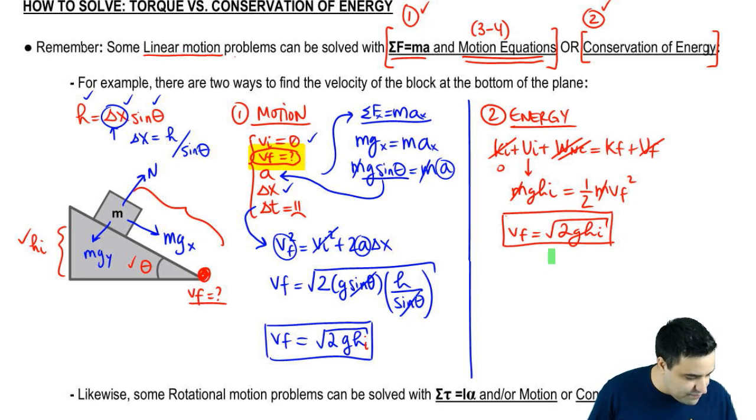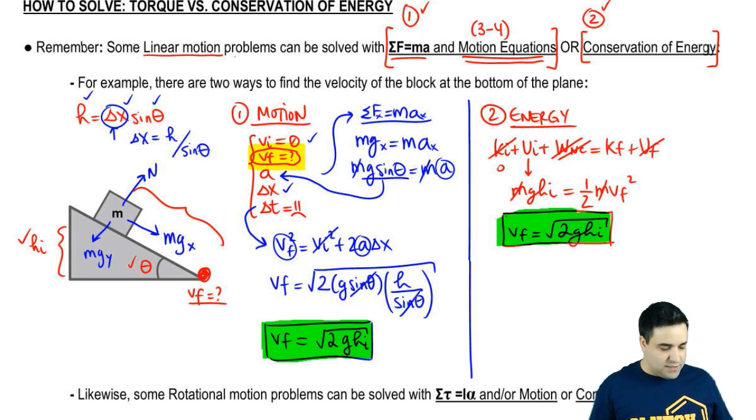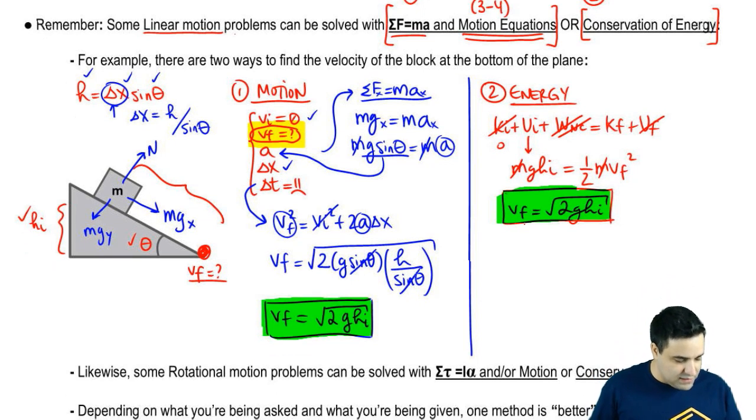So given the choice of methods, you would obviously choose the energy way of solving things because it is better. Now it's better for velocity. If you're looking for acceleration, you would have to use F=ma to find acceleration.